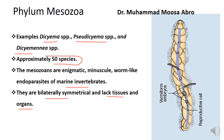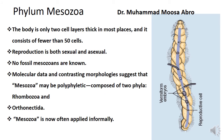The body is only two cell layers thick in most places, and it consists of fewer than 50 cells. The body is made of two cell layers, and in the entire body there are almost 50 cells.